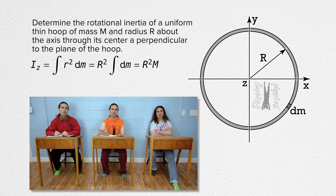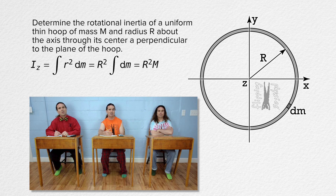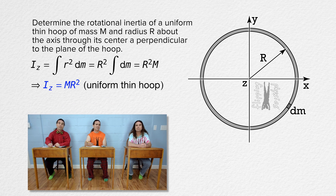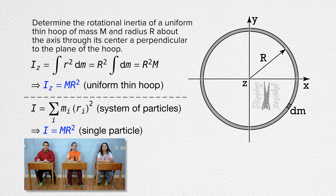So, the moment of inertia of a uniform thin hoop about an axis perpendicular to the plane of the hoop and through its center equals the total mass of the hoop times the radius of the hoop squared. But why is that phrased as a question? That is the same as the moment of inertia of a single particle with total mass capital M located at a distance capital R from the axis of rotation. Why would those two moments of inertia be the same?